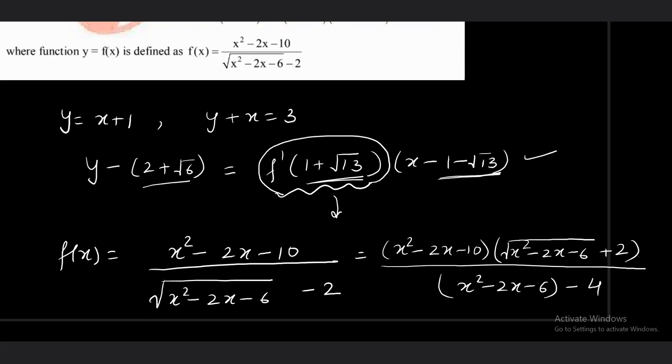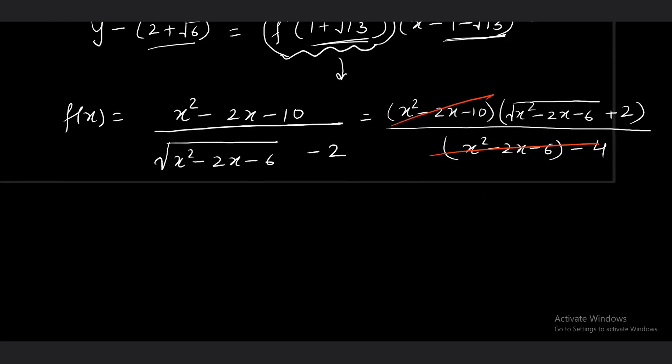Coming to denominator, it will be (x^2 - 2x - 6) minus 4. But did you notice that we can cancel them?